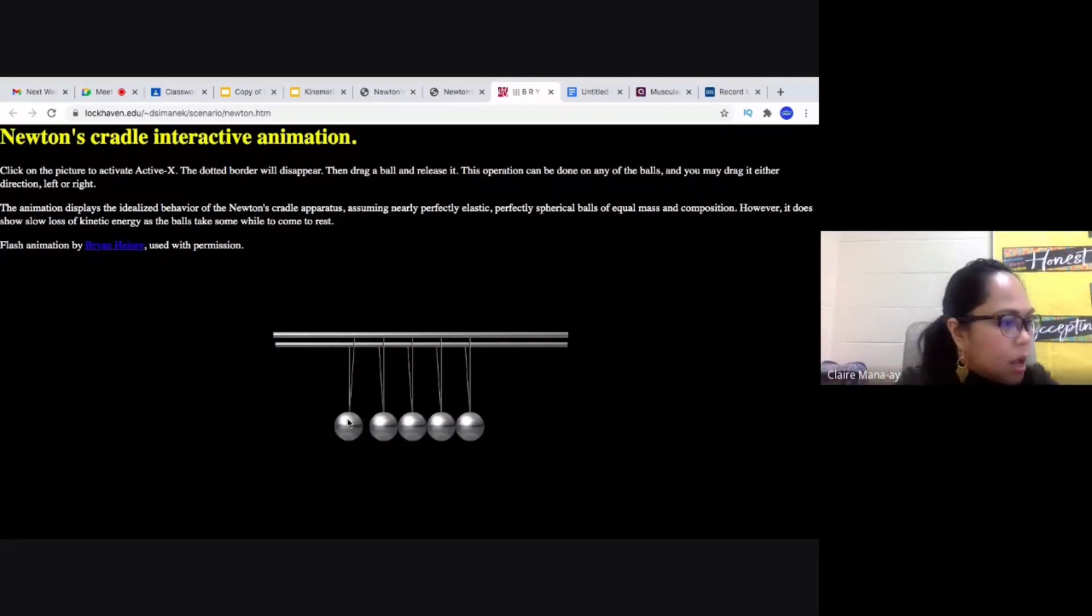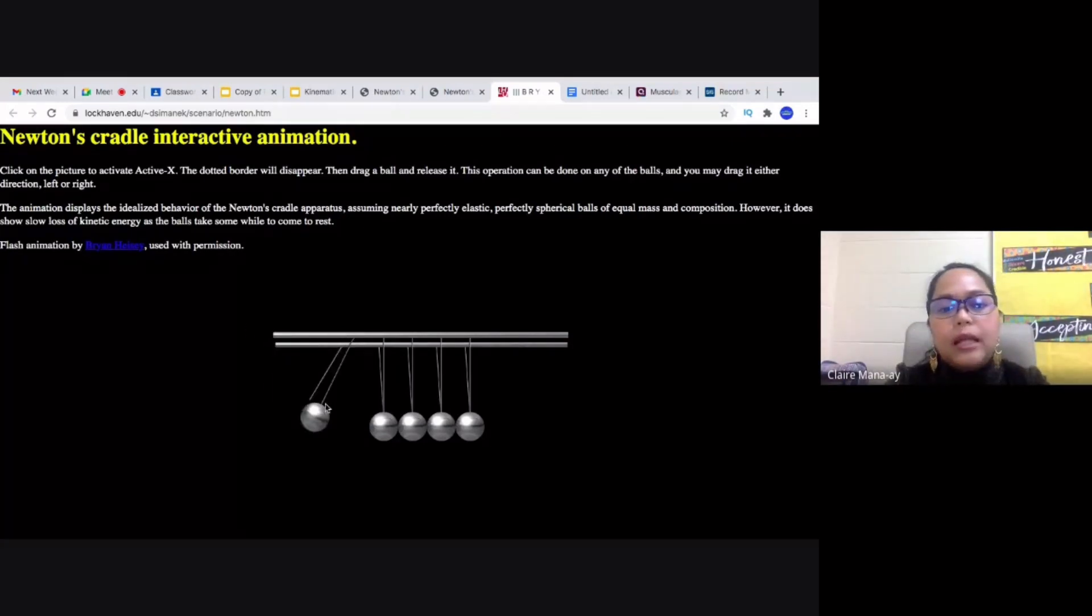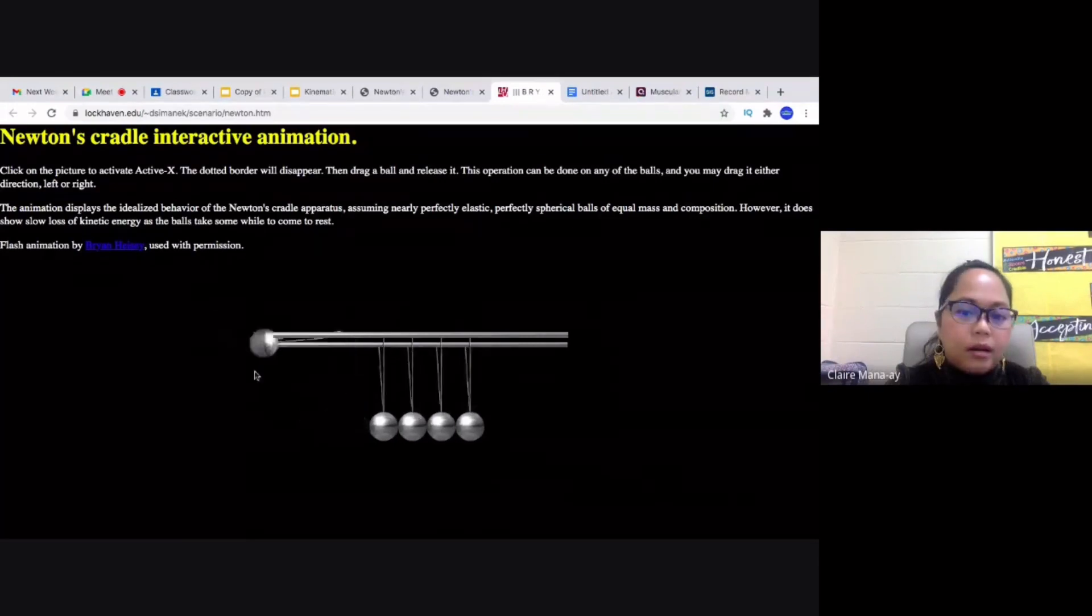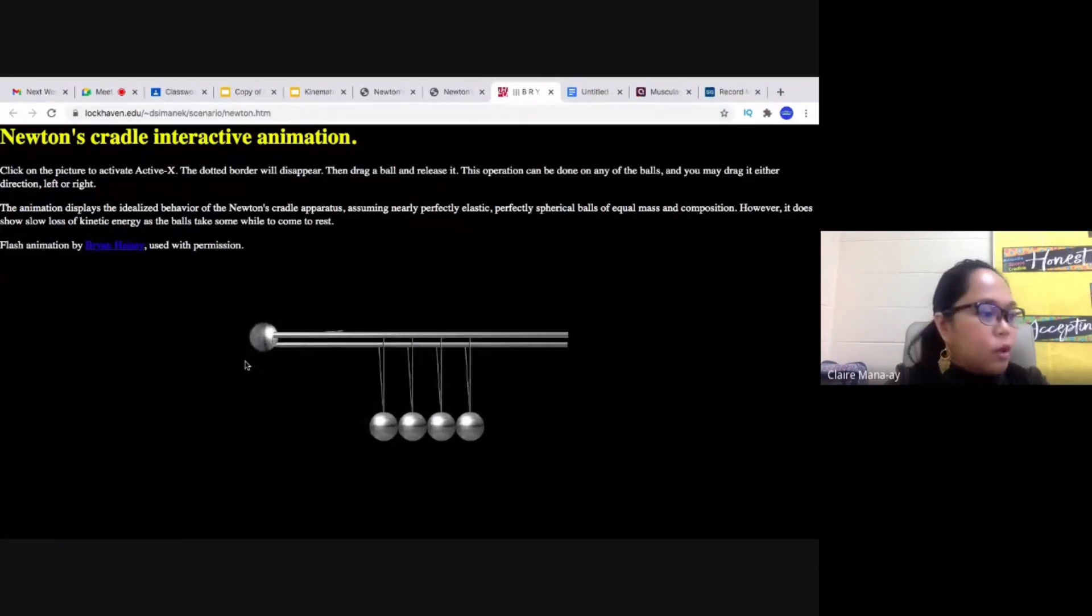Abigail said one ball from the other side is also going to swing. So let's find out if it's correct. I am going to take one ball from this side here, and I'm going to let it hit the rest of the ball there. So Abigail said one ball from the other side will also start swinging.